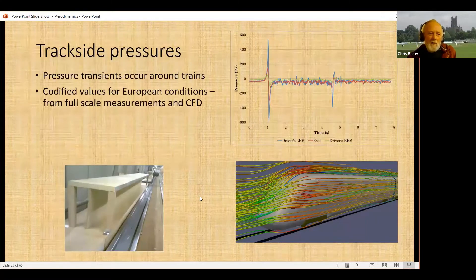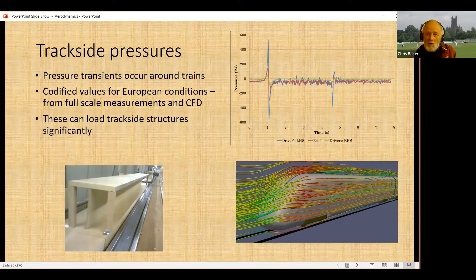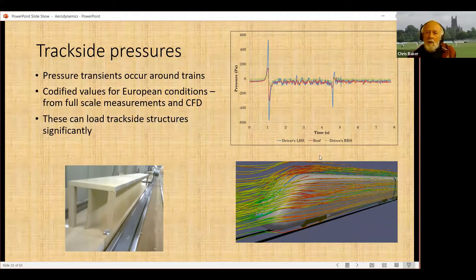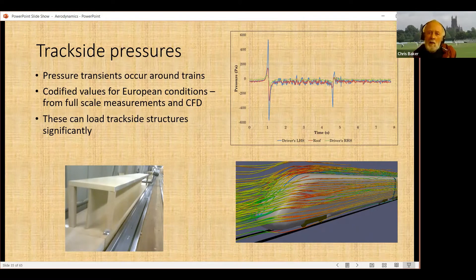The work I've been doing is a number of things. When trains go by, if you stand by them, you can feel a pulse as the train nose goes by. I'm not going to show many pictures or figures, but on the top right, you can see time on the horizontal axis and the pressure suddenly peaking as the train nose goes by. That's quite important because it can actually load platform structures quite significantly. So we've done some work on that for the high-speed railways we're looking at.